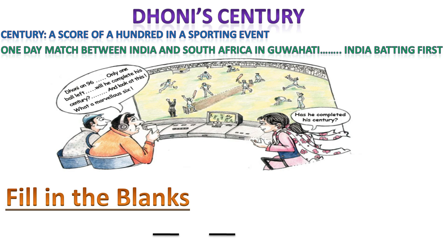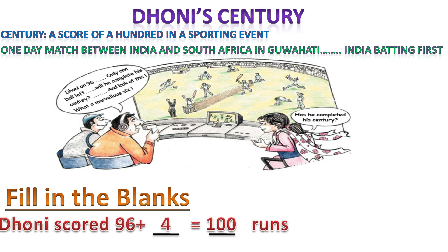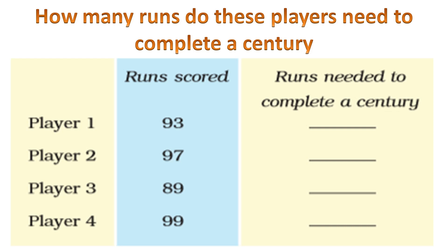The second question is about a century — a score of 100 in a sporting event. In a one-day match between India and South Africa in Gauhati, India was batting first. Dhoni scored 96 plus 4 equals 100 runs — that is one century. Player 1 got 93 runs, so needs 7 more to complete a century.